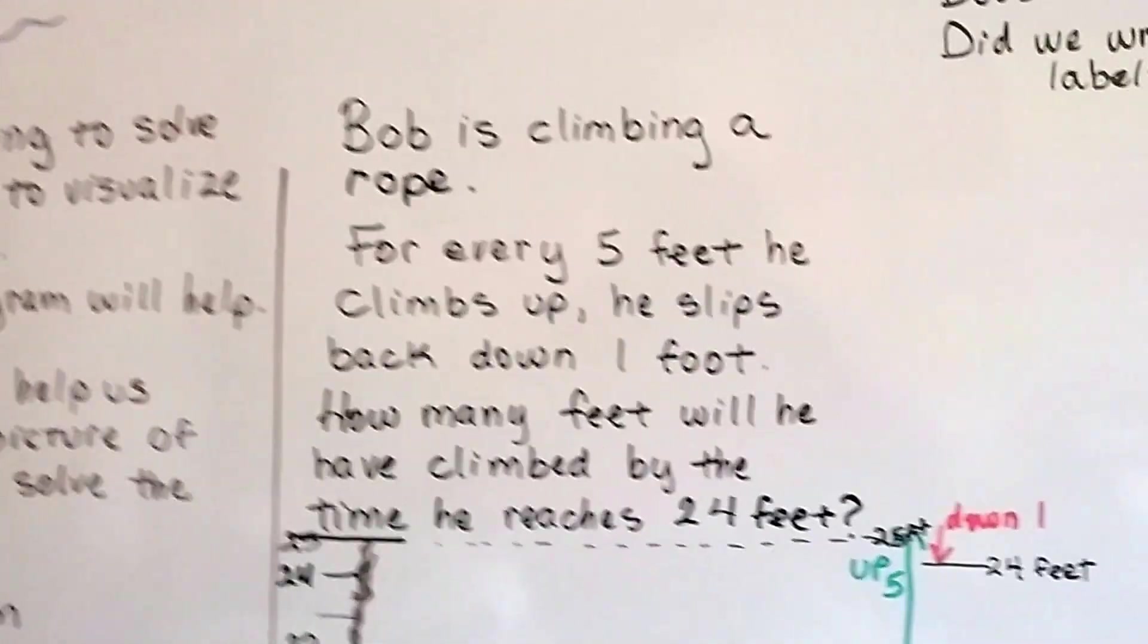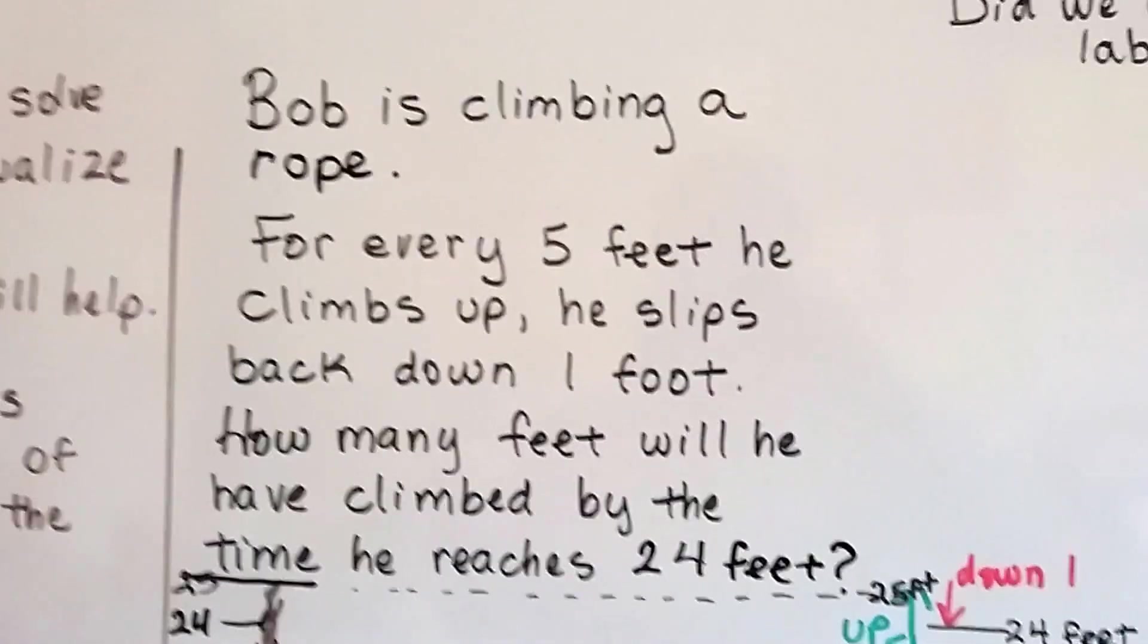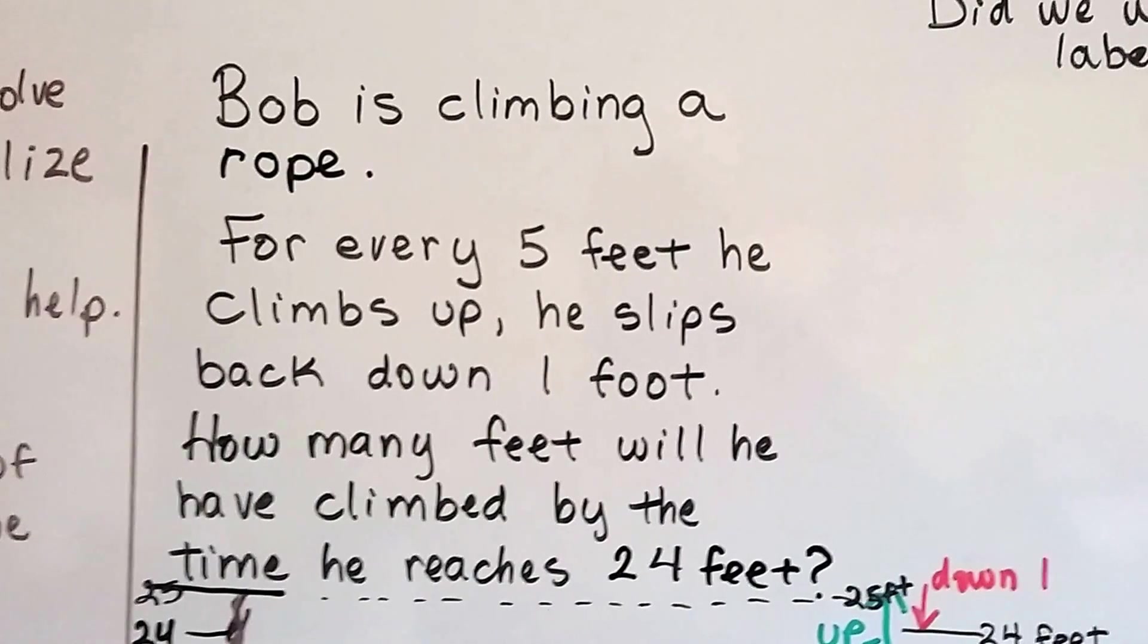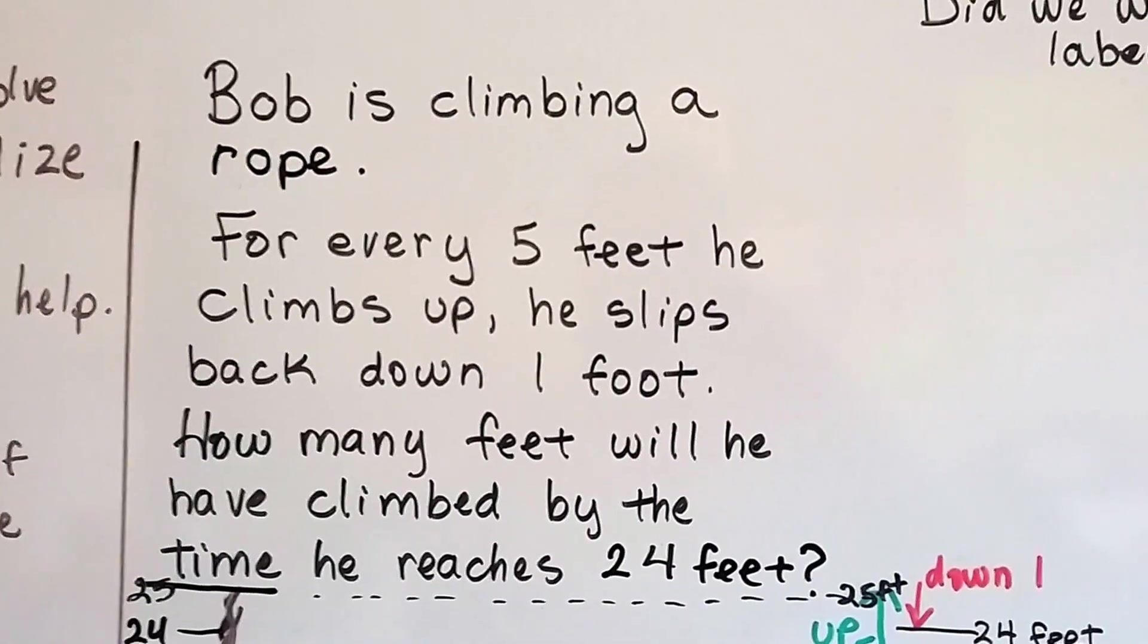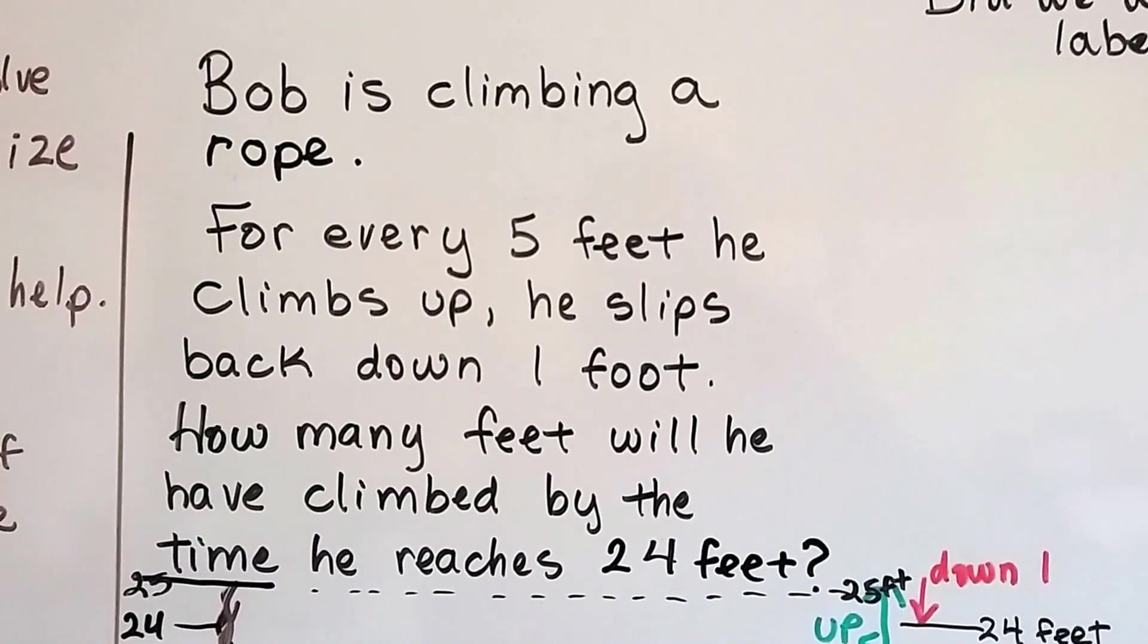So, Bob is climbing a rope. It's a very long rope. It could be 100 feet. We don't know how long the rope is. But for every five feet he climbs up, he slips back down one foot. So how many feet will he have climbed by the time he reaches 24 feet up?